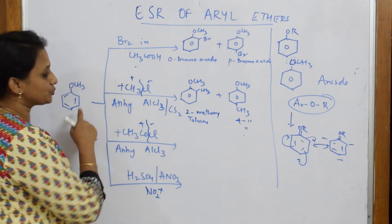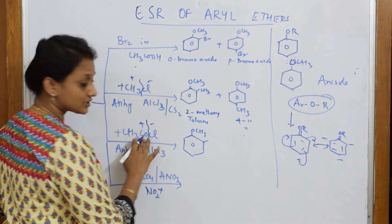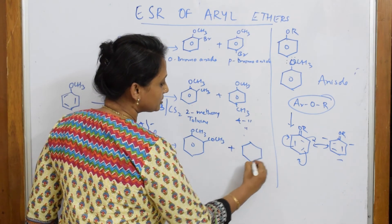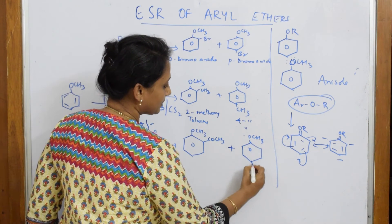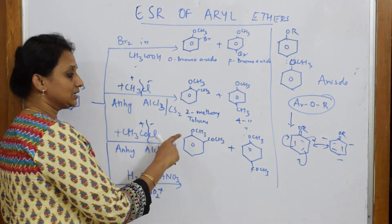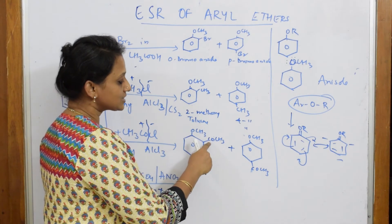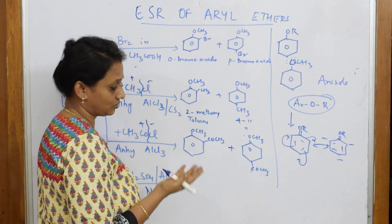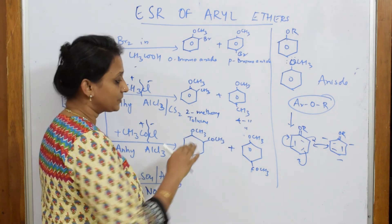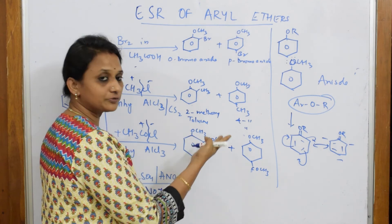In Friedel-Crafts acylation, I have to add the acyl group to anisole. Pick up the anisole and add COCH3 — don't add CH3Cl. You are going to add it at the para position: OCH3 at para, that is COCH3. How to name this? This is acetyl chloride, so you can write ortho-acetoxy-anisole or 2-acetoxy-anisole, or 4-acetoxy-anisole. That's also acetophenone — 4-acetophenone.